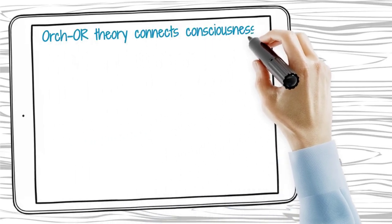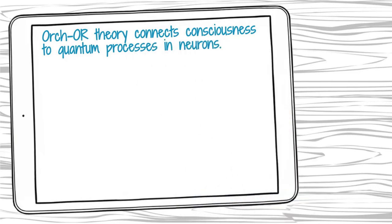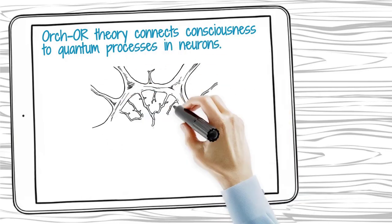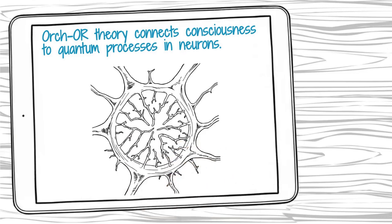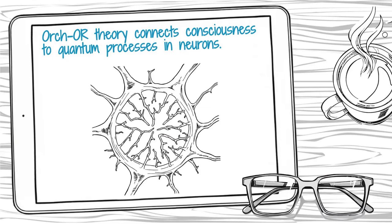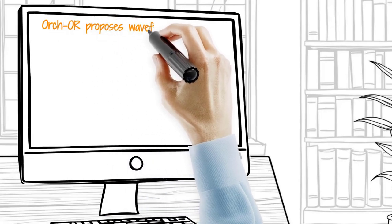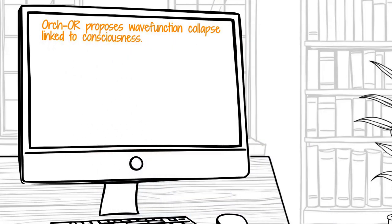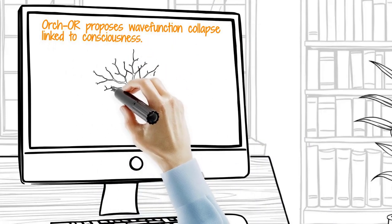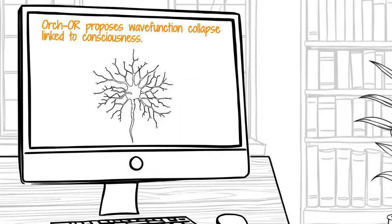The orchestrated objective reduction Orch-OR hypothesis, proposed by physicist Roger Penrose and anesthesiologist Stuart Hameroff, suggests that consciousness arises from quantum processes inside neurons, specifically within microtubules. Unlike classical models of brain activity which rely on electrical and chemical signaling, Orch-OR posits that coherent quantum states in cytoskeletal structures orchestrate conscious awareness. These quantum events are said to undergo objective reduction, a form of wave function collapse tied to fundamental space-time geometry. The orchestration comes from biological control over these quantum collapses, aligning them with cognition.